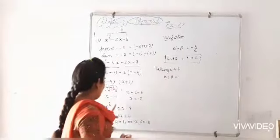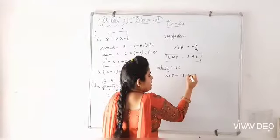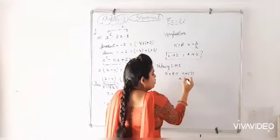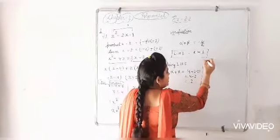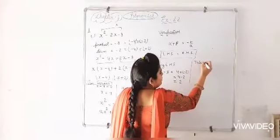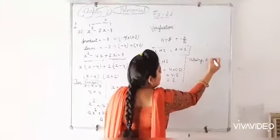Left hand side is alpha plus beta. And here value of alpha is 4 and beta is minus 2. Means 4 minus 2 and it is equal to 2. Now taking right hand side.